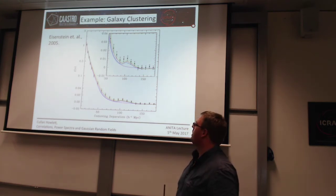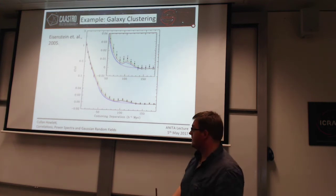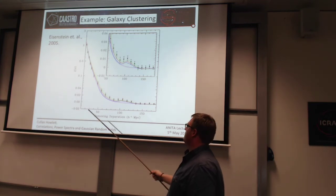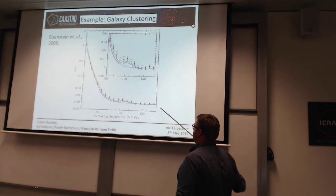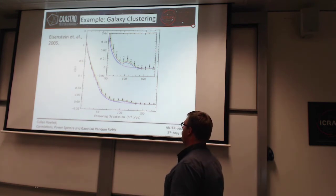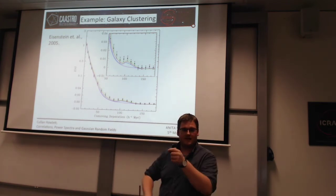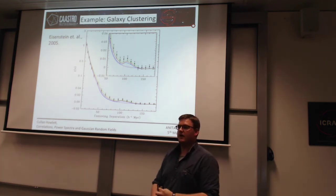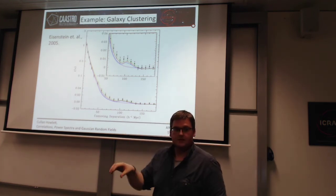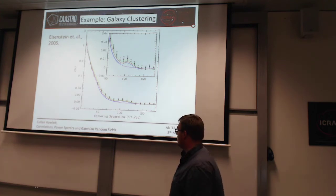That is how we estimate the correlation function — this has been done for nearly 40 years. At least in large scale structure, this is what the correlation function looks like for galaxies in the universe, taken from SDSS, the Sloan Digital Sky Survey. The correlation function plateaus to zero at large scales, because the galaxies are isotropic and homogeneous there. But at small scales, galaxies become clustered — the position of a galaxy on small scales is correlated with the positions of other galaxies, in the same way that star-forming regions within galaxies are correlated with each other.